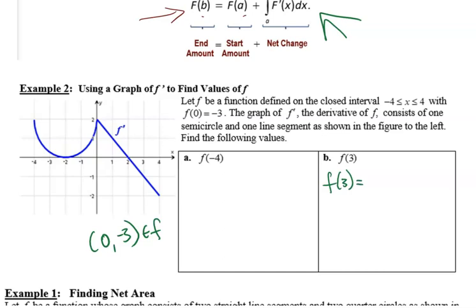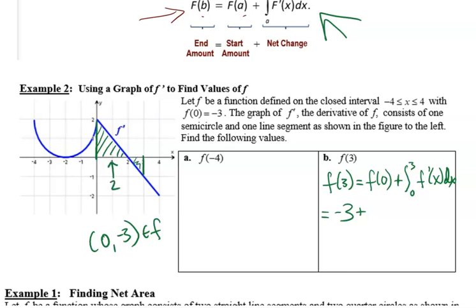F of 3, the after amount, is equal to the initial amount f of 0, plus the accumulation from 0 to 3 of f prime of x dx. Plugging values in, f of 0 is negative 3 plus the integral from 0 to 3. That definite integral gives us net area — area above minus area below. On the interval from 0 to 3, I have a triangle with area 2 and a triangle with area one half. The integral is 2 minus one half, so negative 3 plus two minus one half gives negative 3 halves.